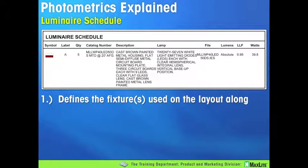This is known as a luminaire schedule — essentially a summary of the lighting product being used in the layout. In this case, we have a symbol and letter representing the light fixtures, the total number of fixtures, the catalog number — a MaxLite model number for a 40-watt, 5,000 Kelvin wall pack mounted at 20 feet off the ground. It includes a brief description of the fixture, the light source (in this case LED), and the IES file. MaxLite generates IES files, or has them generated at third-party laboratories, for all of our LED and other commercial products.